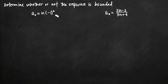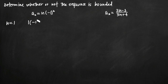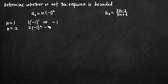To determine whether the sequence is increasing or decreasing, the easiest way is to plug in values for n starting with n equals 1. For our first problem, a sub n equals n times the quantity negative 1 raised to the n power. Plugging in n equals 1, we get 1 times negative 1 to the first power, which gives us negative 1. Plugging in n equals 2, we get 2 times negative 1 squared, and negative 1 squared gives us positive 1, so 2 times 1 equals 2.